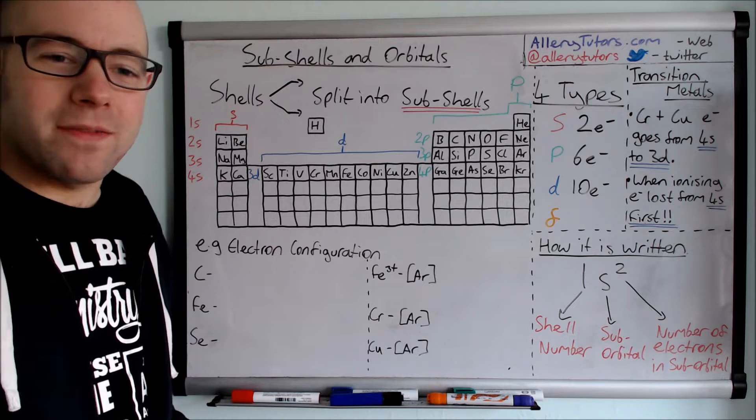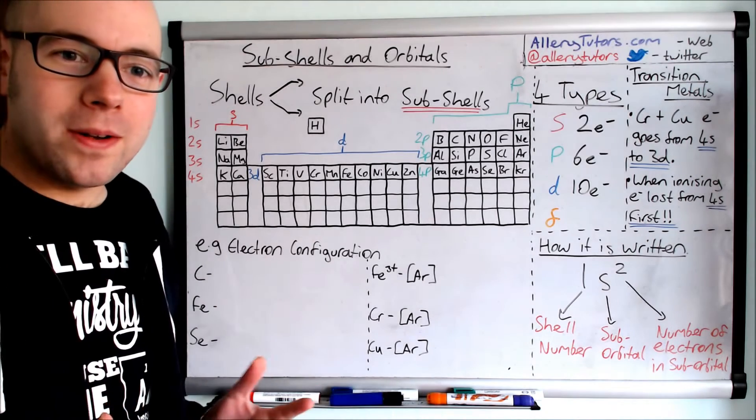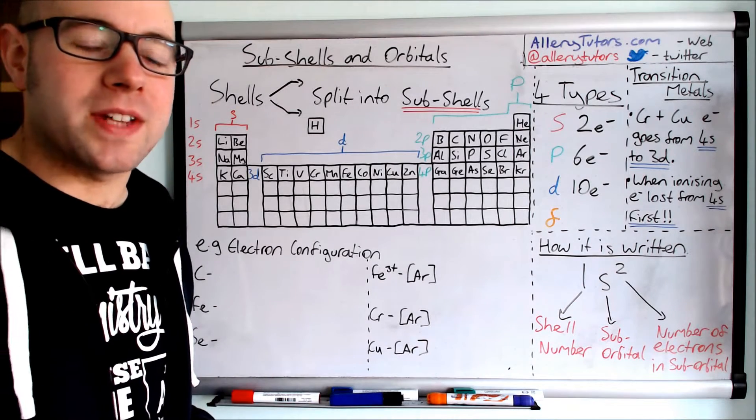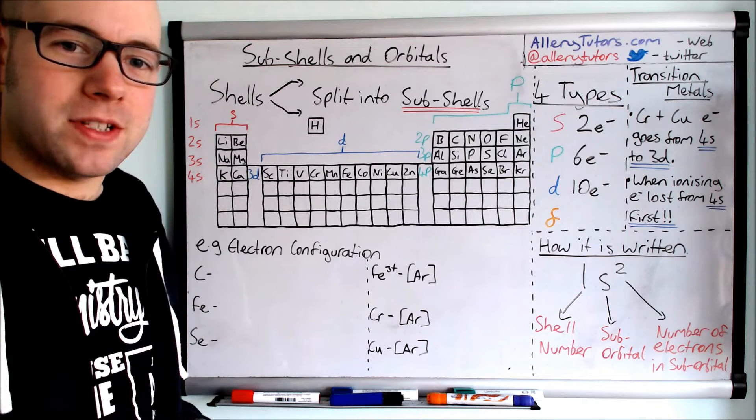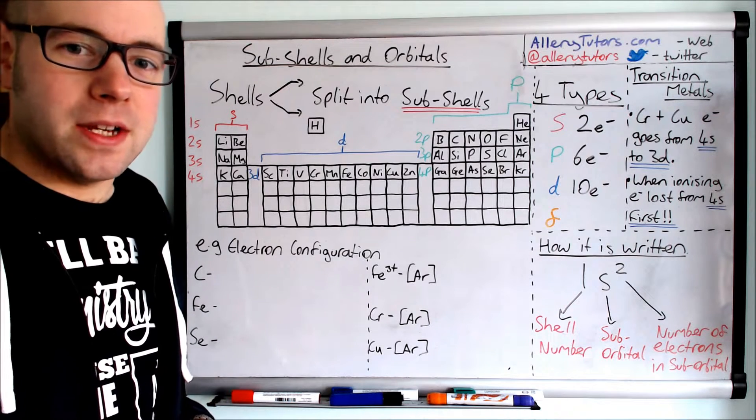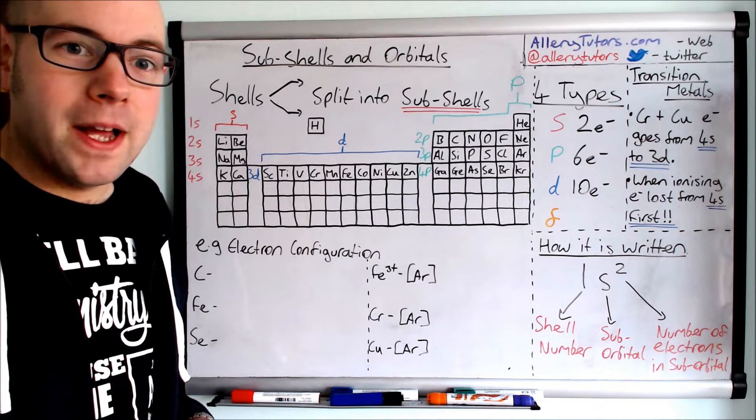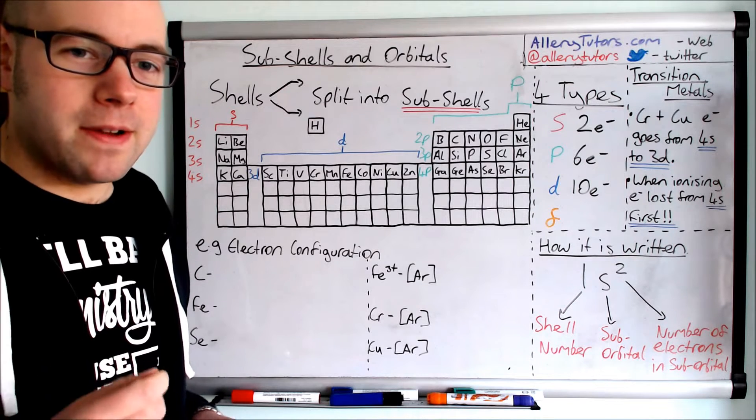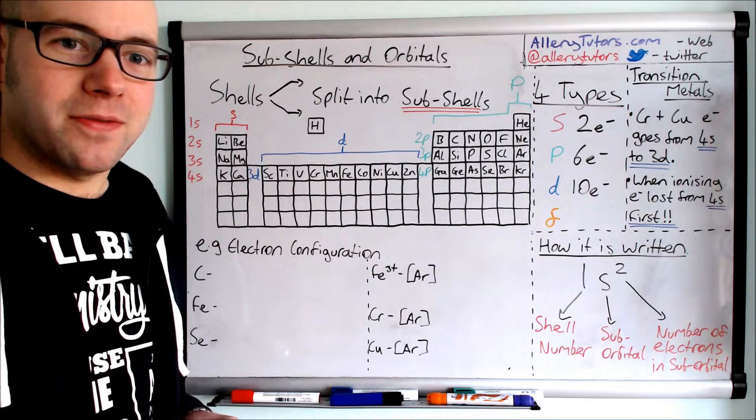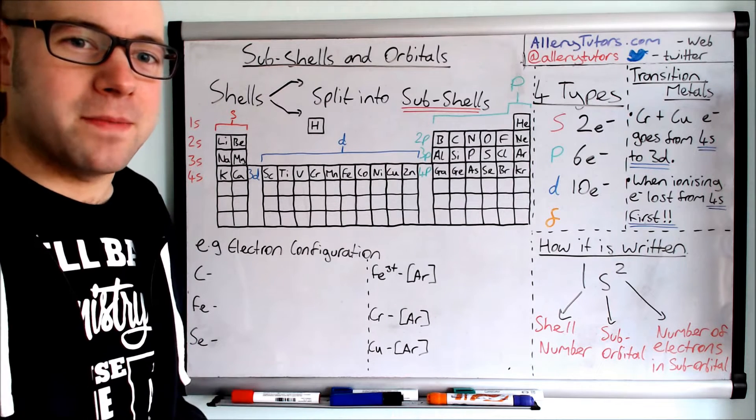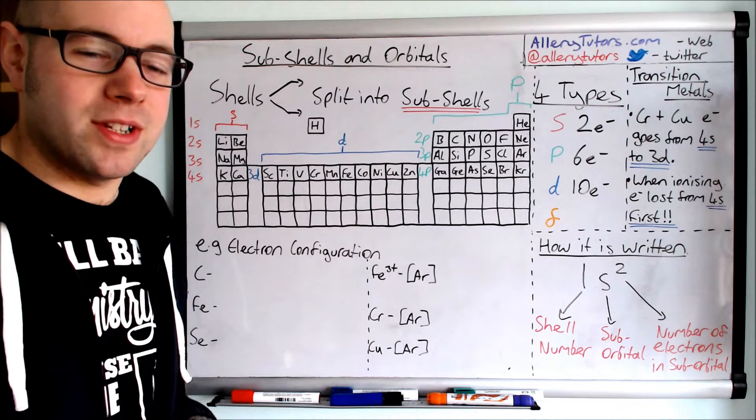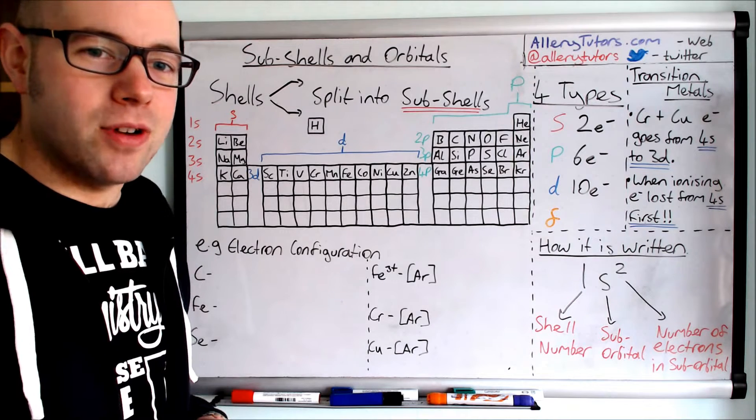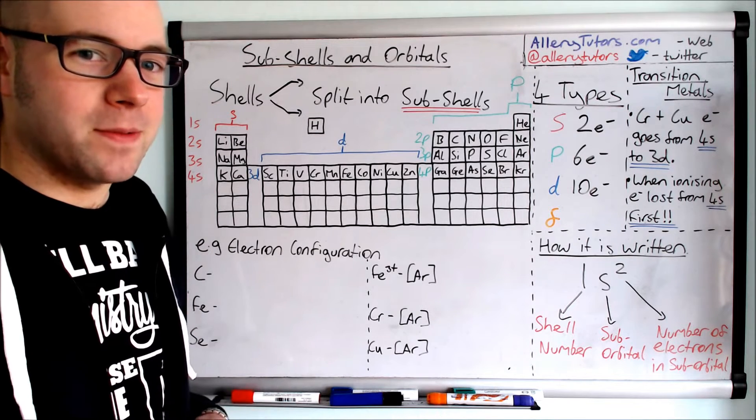Hi there, my name is Chris Harris and I'm from AdobeTutors.com and welcome to this video on subshells and orbitals. In this video we're going to be looking at the different types of subshells and the orbitals that make them up. I'm also going to look at the very important electron configuration which is always asked in exams, and some of the odd ones such as transition metals, in particular chromium and copper, which don't quite behave themselves.